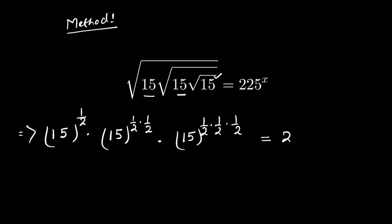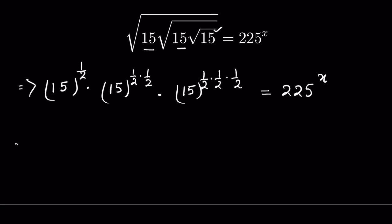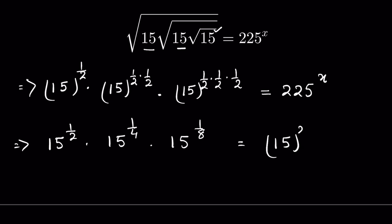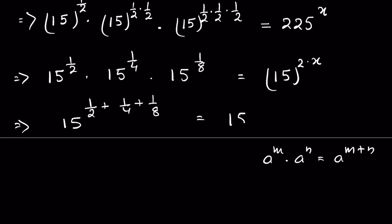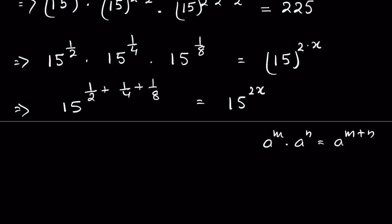This equals 225 raised to the power of x. Now it is 15 raised to the power of 1 upon 2, times 15 raised to the power of 1 upon 4, times 15 raised to the power of 1 upon 8, is equal to 225 — which we can write as 15 raised to the power of 2 — then times x. When a raised to the power m times a raised to the power n equals a raised to the power m plus n, we can add the exponents. So 15 raised to the power of 1 upon 2 plus 1 upon 4 plus 1 upon 8 is equal to 15 raised to the power of 2x.